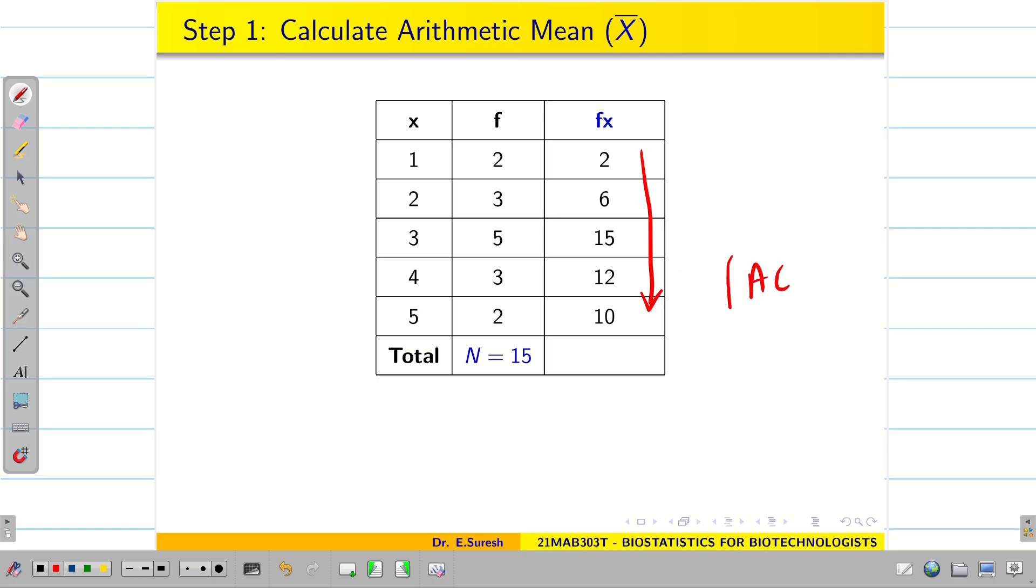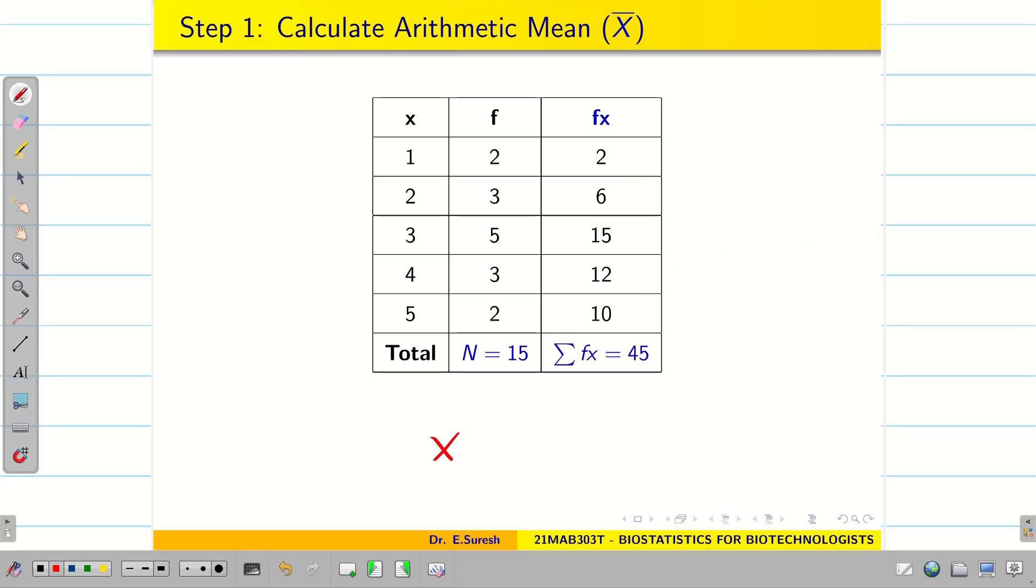Once it is done, press ac button. And then add everything. Therefore, it's time to find arithmetic mean. X bar is summation fx by n. 45 by 15, it's going to be simply 3.